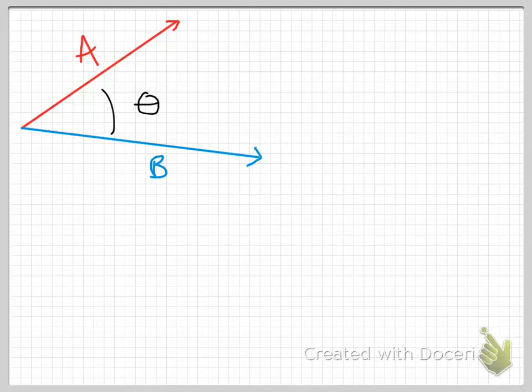In this video, we're going to start to investigate one of the ways in which we can multiply vectors together. So far in class and in videos, we've talked about vector addition, we've talked about vector subtraction. In this video, we're going to talk about vector multiplication.